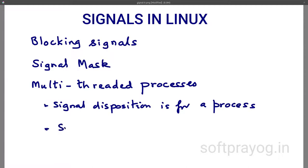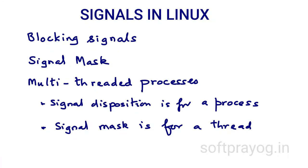Talking of threads, let me slightly digress and discuss signals in multi-threading. The short answer is that signal disposition is process-wide but signal mask is per thread. It is not possible to send a signal to a particular thread of a process unless both the sender and receiver are part of the same process. If you send a signal to a multi-threaded process, which thread will receive it is not determinate. If you want a dedicated thread for signals, you can block signals using pthread_sigmask in the main thread. Threads created by main inherit a copy of the signal mask. In the thread dedicated to receiving signals, you can wait for the relevant signals using sigwait.